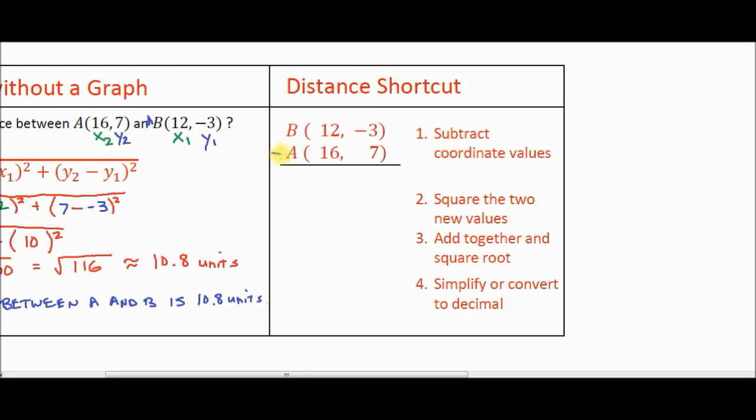this coordinate on top and this one on bottom, or this one on top and this one on bottom, the process will come out with the same answer. So you're going to subtract them. I'm going to put a minus sign here to remind you that you're going to subtract the coordinates. So let's take a look at our coordinates. We have the x value here is 12, minus the x value here is 16. 12 minus 16 is negative 4. In this column, we have a y value of negative 3. Negative 3 minus 7 is negative 10. So there's our two numbers that we get from step number one.